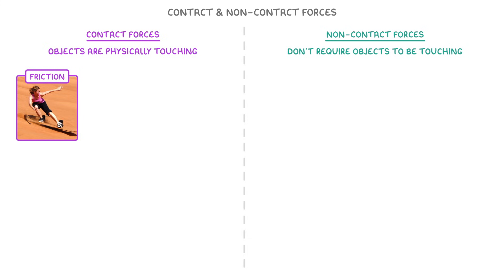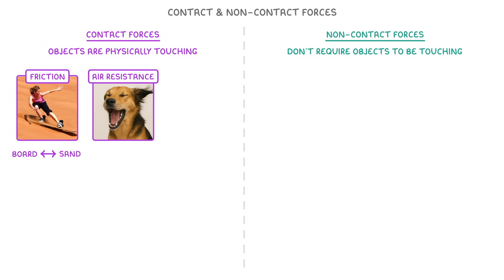For example, the friction between this board and the sand is a contact force, because the board and the sand have to be touching for the friction to act. Similarly, air resistance is a contact force, because the object — in this case the dog's face — has to come into contact with the air particles in order to feel the resistance.